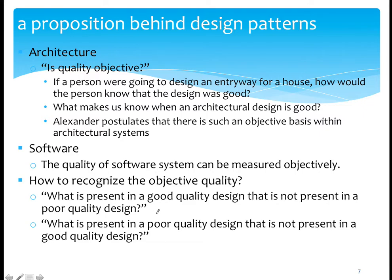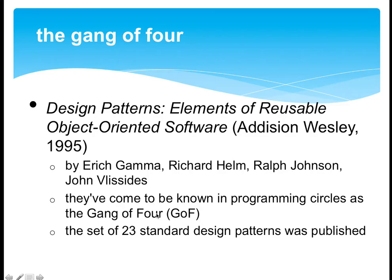By trying to answer those two questions, we can find objective quality. The pioneers of design patterns in software are four scholars — Gamma, Helm, Johnson, and Vlissides. They published a book titled "Design Patterns: Elements of Reusable Object-Oriented Software" in 1995, bringing the concept of design patterns into the software design world. We call those four scholars the Gang of Four, and they introduced 23 standard design patterns.